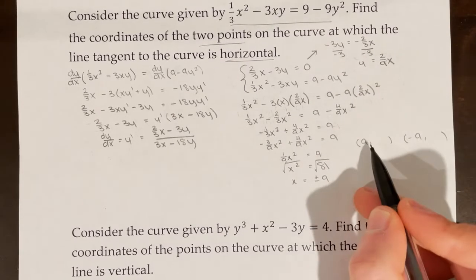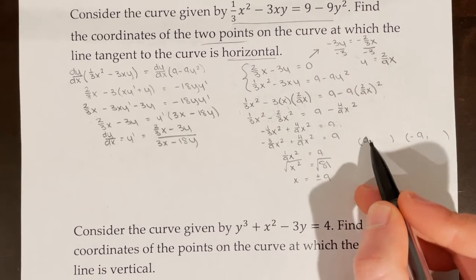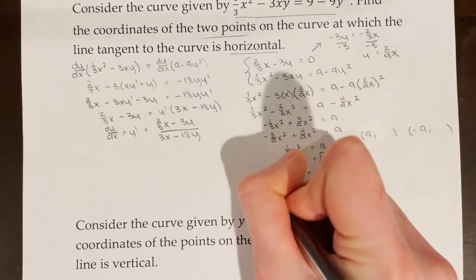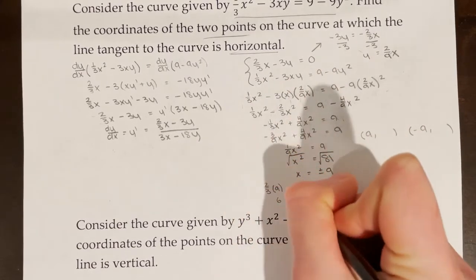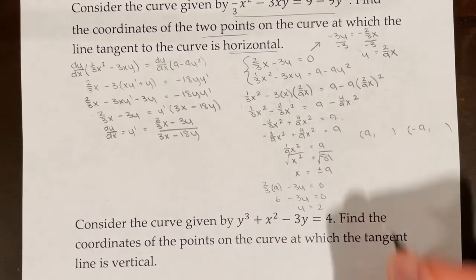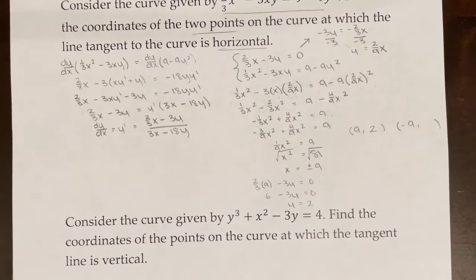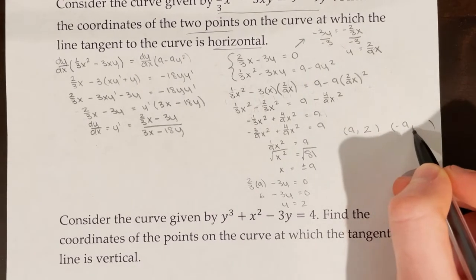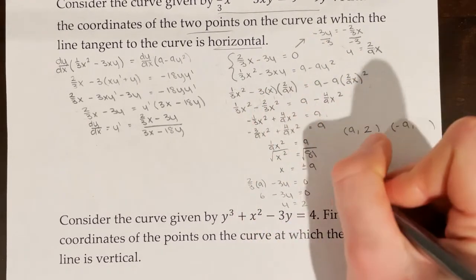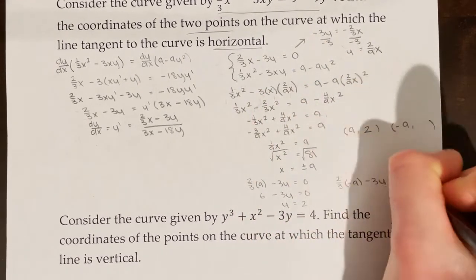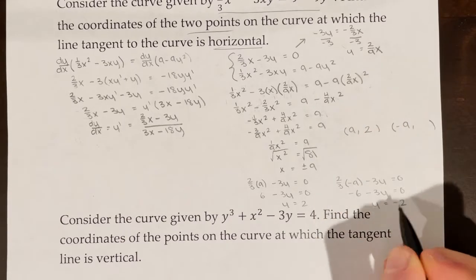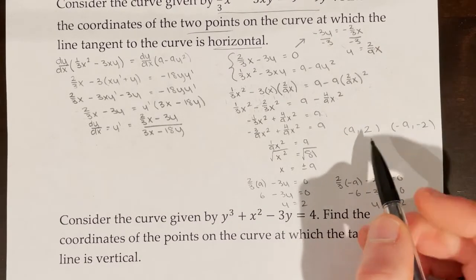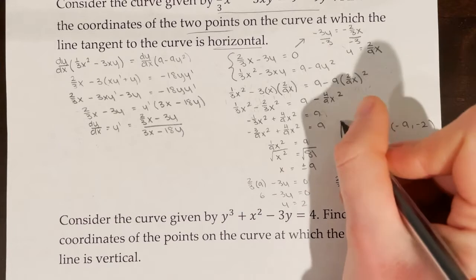Plugging positive 9 into the top equation, y needs to equal 2, giving the point (9, 2). For the other point, plugging in negative 9 gives y = -2, so the other point is (-9, -2). These are the two points at which the tangent line to the curve is horizontal.